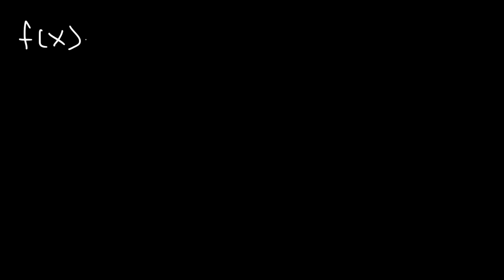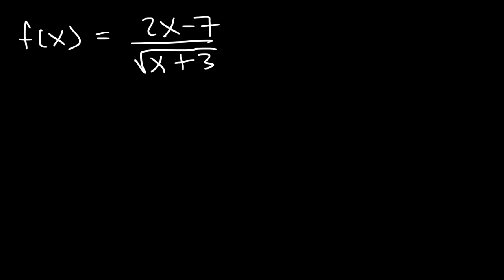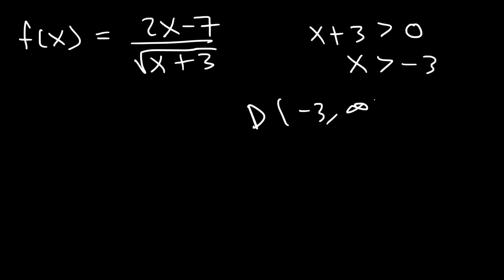Sometimes you may have a fraction with a square root in the denominator. If the square root were in the numerator, we'd set the inside equal to or greater than 0. But since we can't have a 0 in the bottom of a fraction, we set the inside strictly greater than 0. So x has to be greater than negative 3. The domain is simply from negative 3 to infinity, not including negative 3 — using a parenthesis.